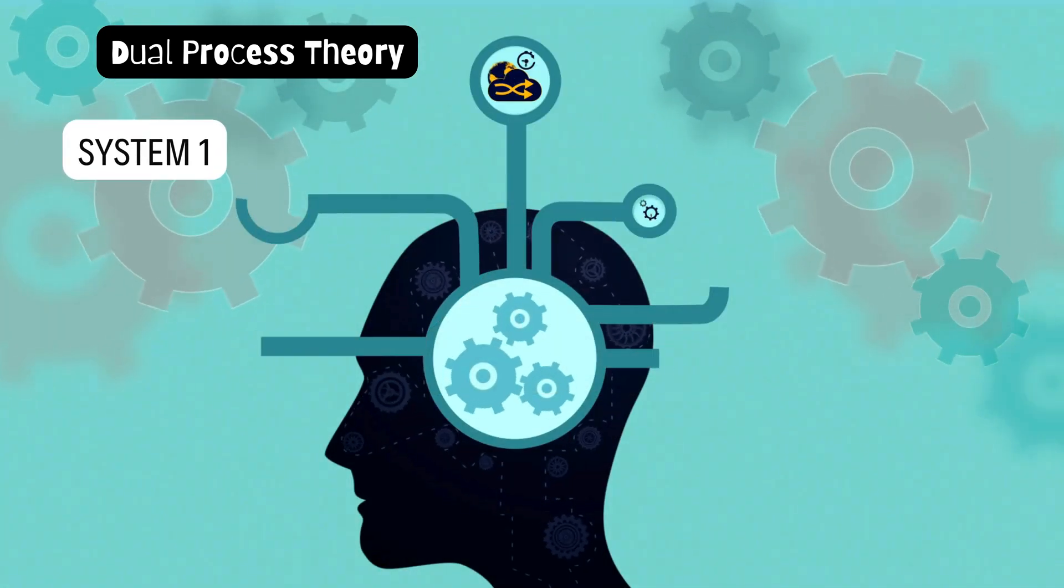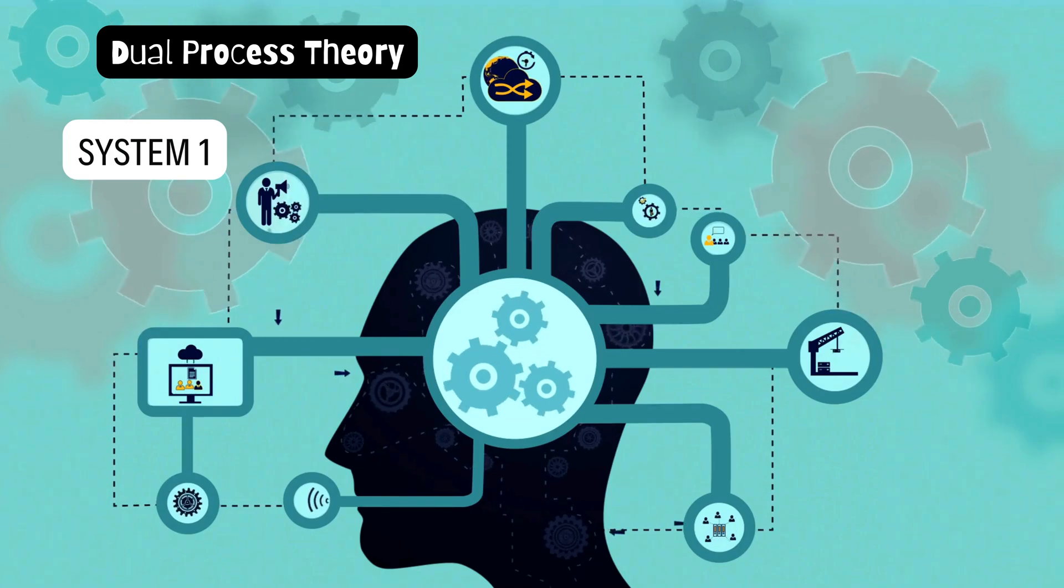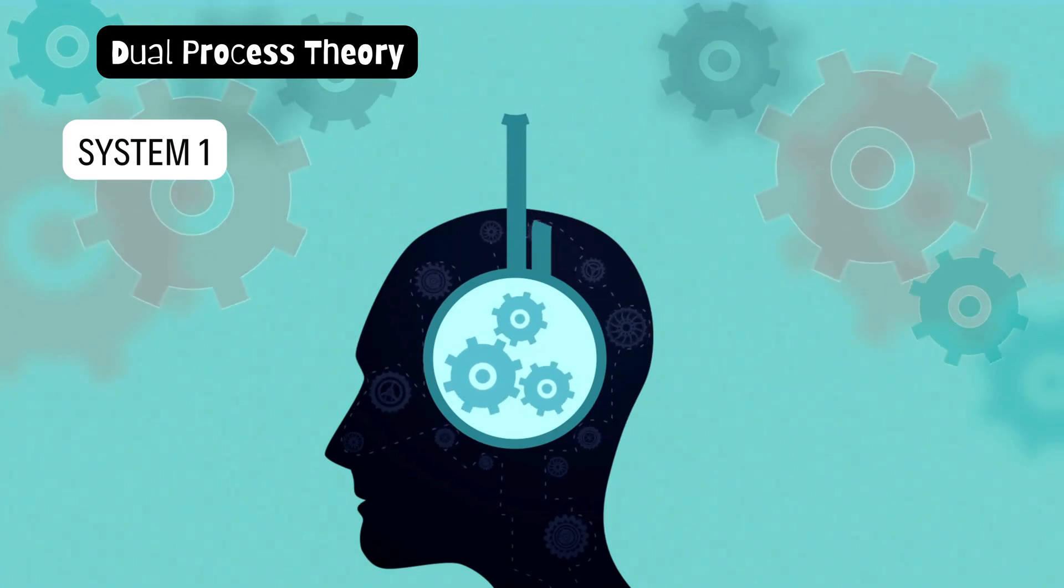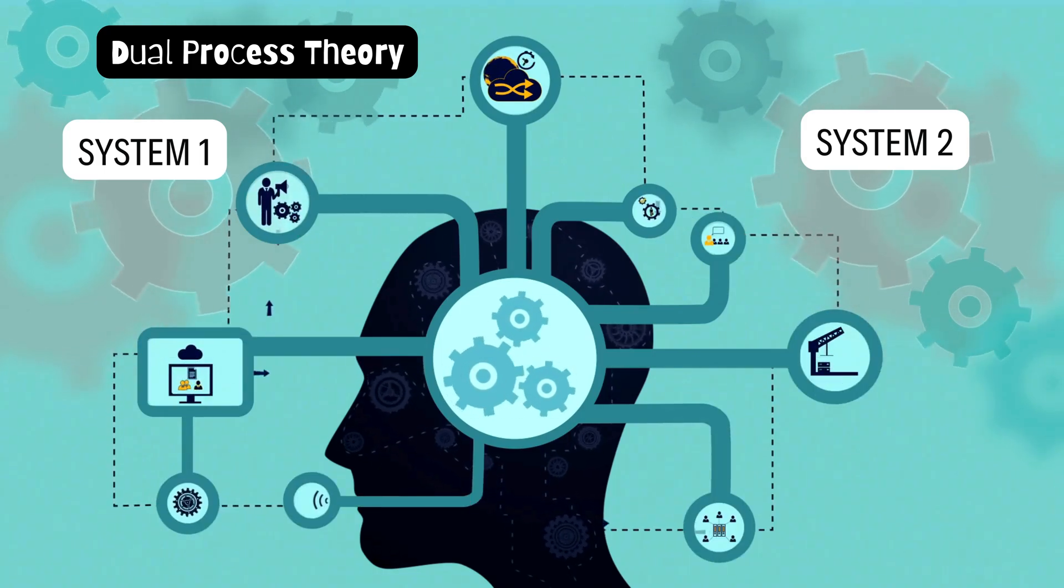Now, here's why this matters. System one is super efficient, but it can lead to snap judgments and biases like jumping to conclusions about sharks and vending machines. System two, while more accurate, is slow and effortful, so it's not practical for every decision.